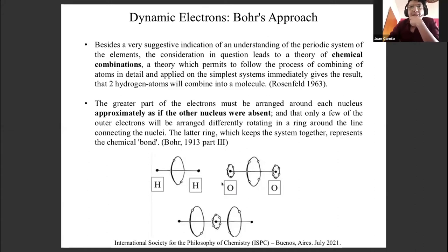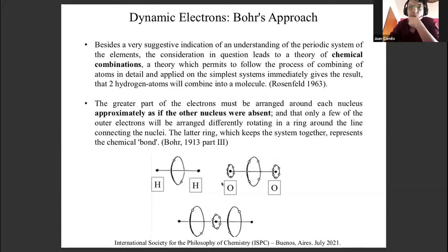Bohr was really confident regarding the chemical aspects of his own theory because he was able to explain with this mechanism why two hydrogen atoms will combine into a full molecule. What he refers to as chemical combination is that the greater part of the electrons must be arranged around each nucleus approximately as if the other nucleus were absent. You can see in these representations how this model works — the black dots represent the atomic nuclei and in the middle, spinning between those atomic nuclei, the electrons are rapidly revolving. That is the representation of Bohr's model of bonding — hydrogen molecule, oxygen molecule, and the molecule of water.